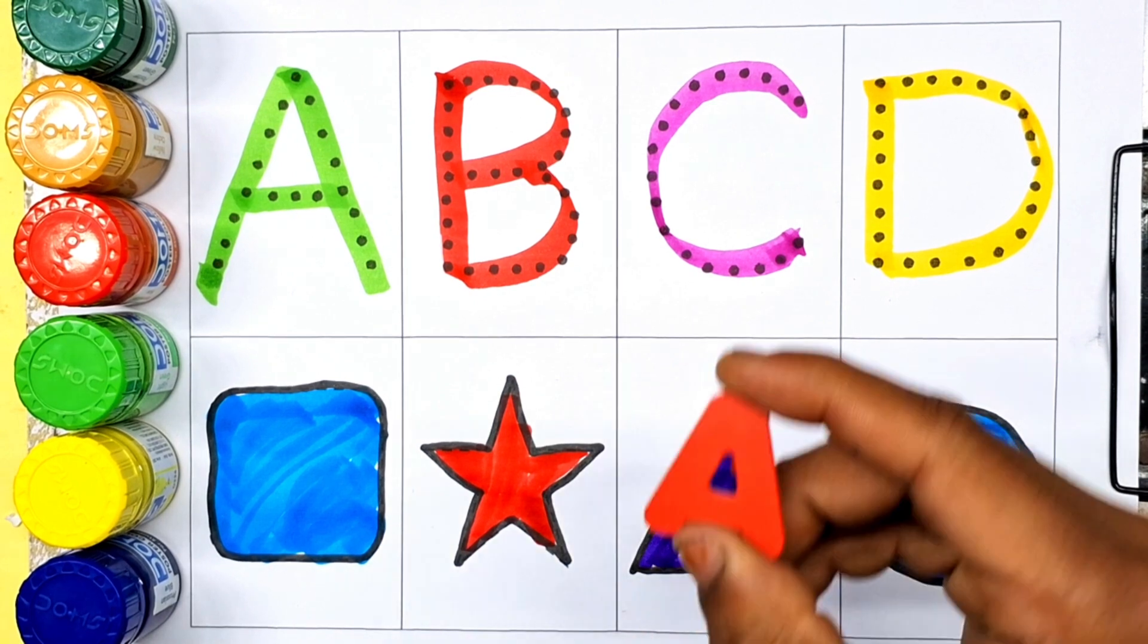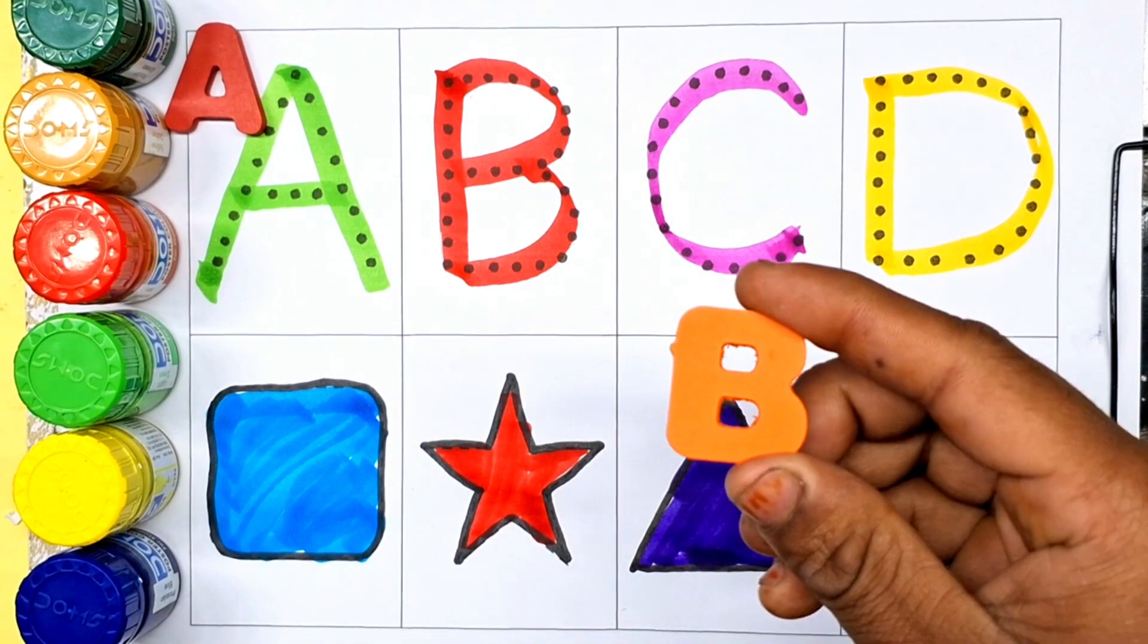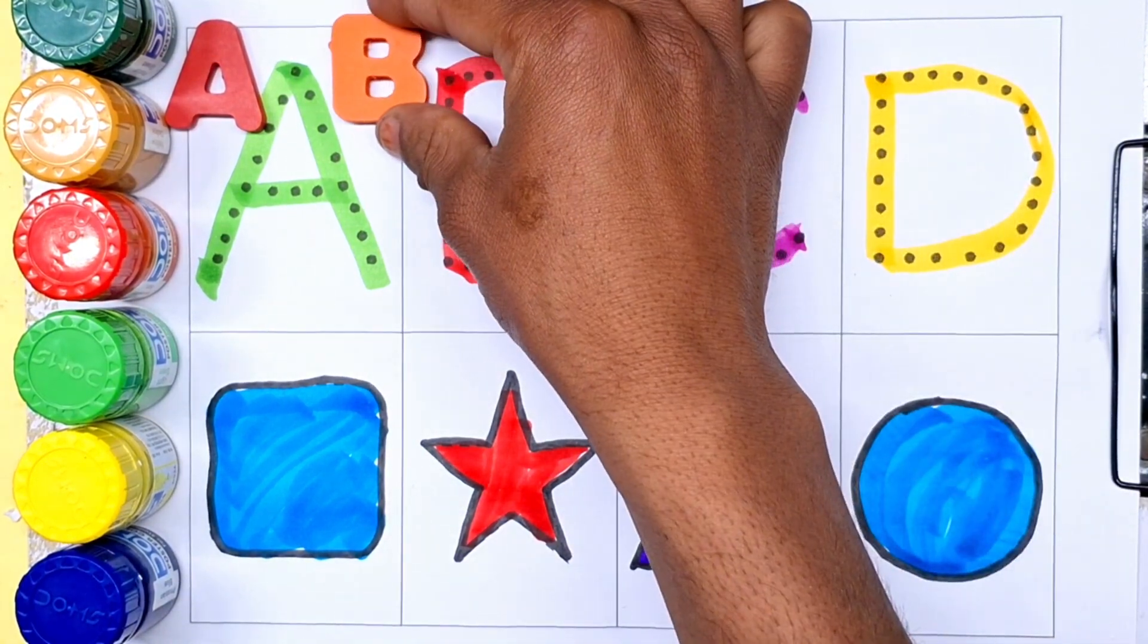Now repeat alphabet and shapes. A, A for apple, A for ant, B, B for ball.